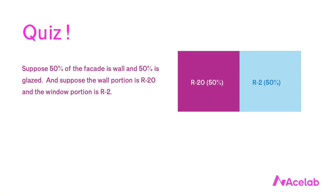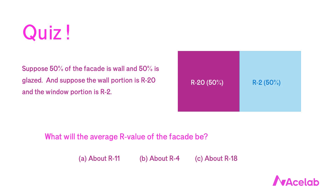Take a hypothetical wall. Suppose 50% is glazed and 50% is opaque. Suppose the wall portion is R20 and the window portion is R2. For the purposes of this thought experiment, don't think of this as a real wall with studs and thermal bridging and construction defects. Just think of some kind of monolithic R20 material perfectly joined to some kind of monolithic R2 material. What will the average R value of the facade be? Will it be A, about R11; B, about R4; or C, about R18?